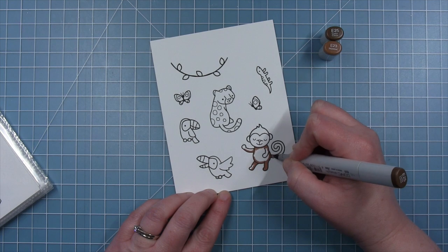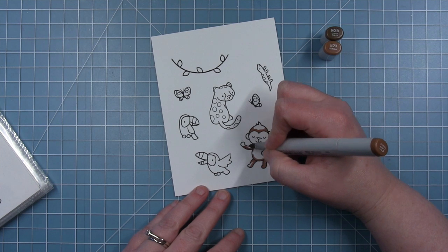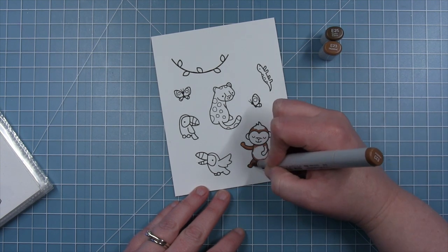So the idea behind this card was to use the cloud inserts as a tree canopy. So that is why I started out with the little monkey so that he could be up in the tree.